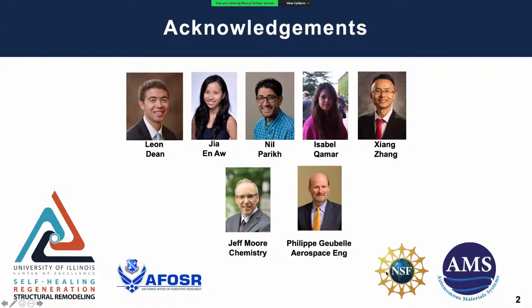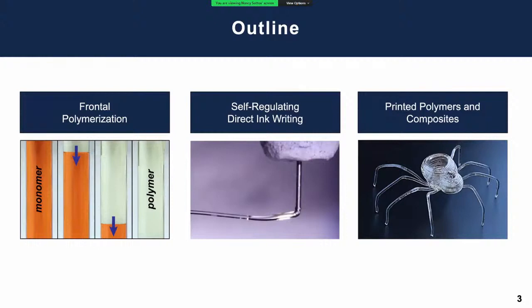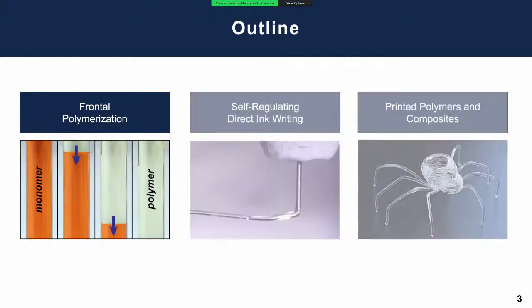An outline of how my talk is going to go: I'm going to give some background on a technique we're using to accomplish polymerization called frontal polymerization, then I'll talk about the use of frontal polymerization in direct ink writing to get this self-regulating direct ink write, which I'll explain what I mean by that, and then talk about the results, some printed polymers and composites that we're able to fabricate.